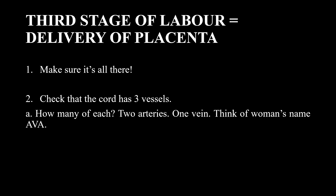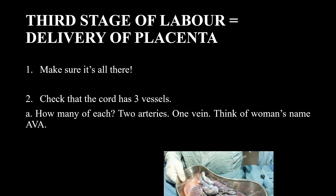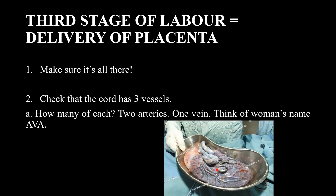The third stage of labour means delivery of the placenta. After delivering the placenta, inspect it carefully — check that all cotyledons and membranes are intact. If a cotyledon is left back or a piece of membrane is missing, this increases the chances of postpartum hemorrhage.